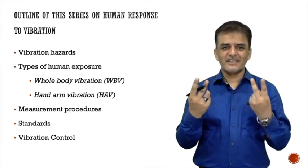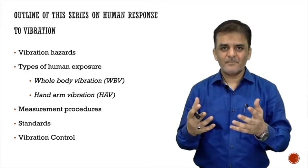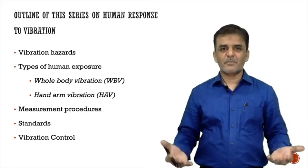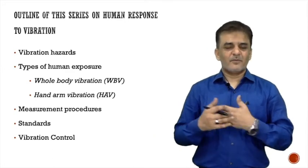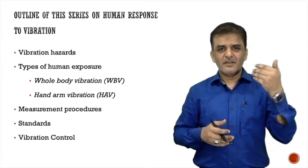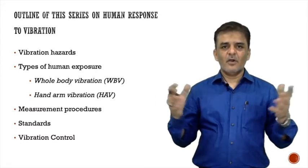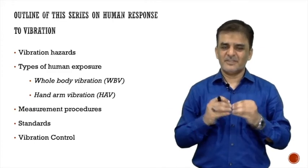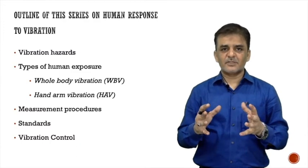Human vibration experts have categorized vibration exposure into two basic categories. The first is whole-body vibration exposure, where the entire body is exposed through the platform on which a person is standing, sitting, or lying — for example, traveling in a train, moving in an aircraft, or riding a bicycle.